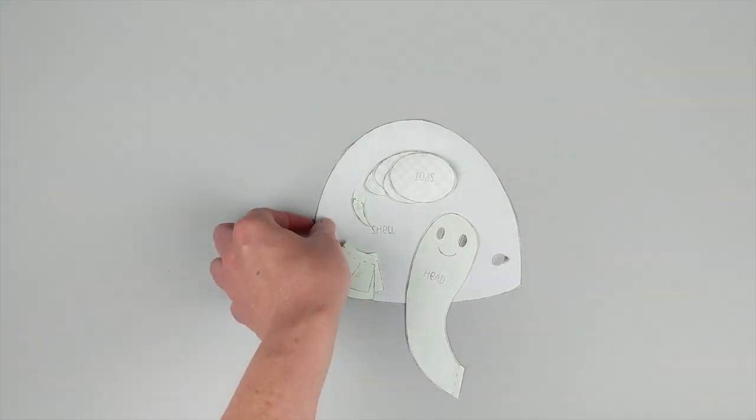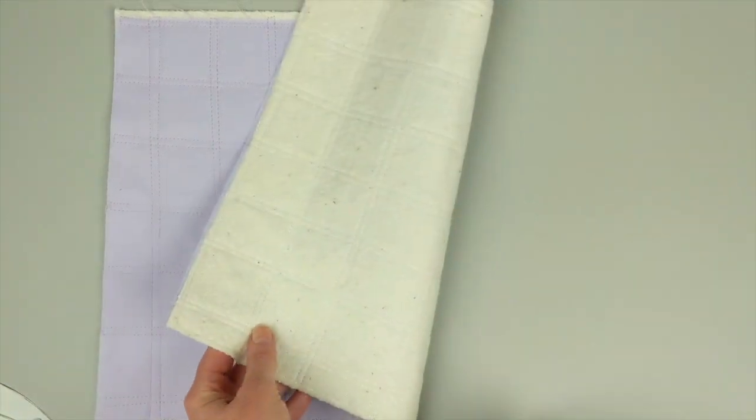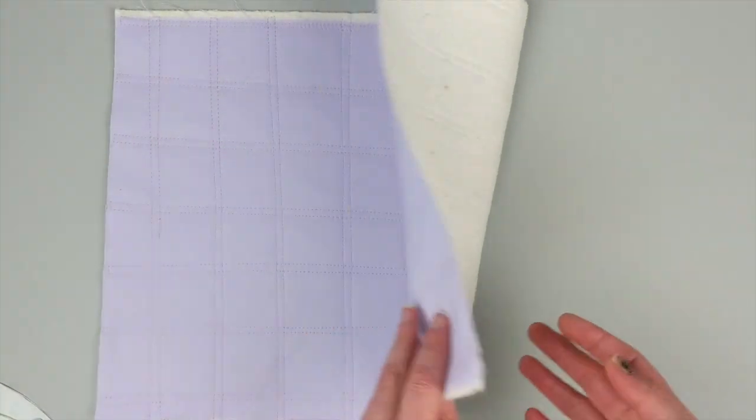Now we're going to work on laying those all out. I've got a piece of fabric here that's already been quilted to the batting.